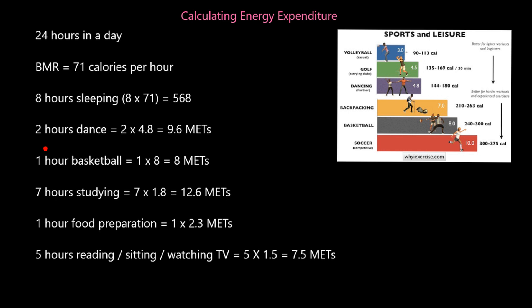There are 2 hours of dance during the 24-hour period. Dance has a MET value of 4.8, so 2 hours times 4.8 equals 9.6 MET. 1 hour of basketball has a MET value of 8.0, so 1 times 8 equals 8 MET. Then 7 hours of studying — sitting, moving around in the library — generally has a MET value of 1.8, so 7 times 1.8 is 12.6 MET.